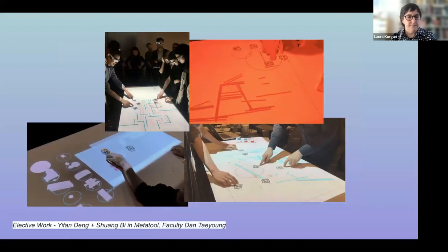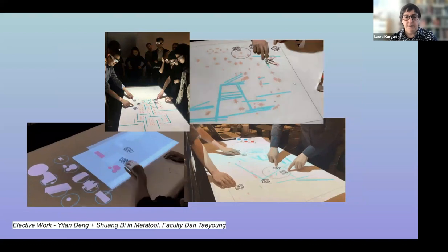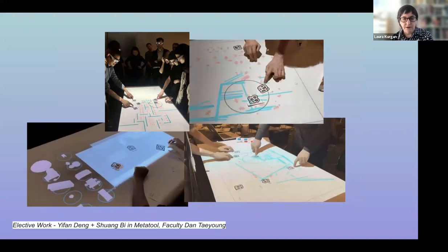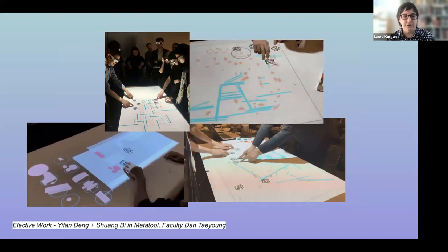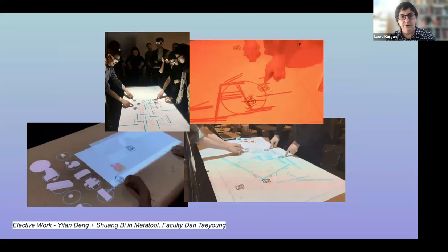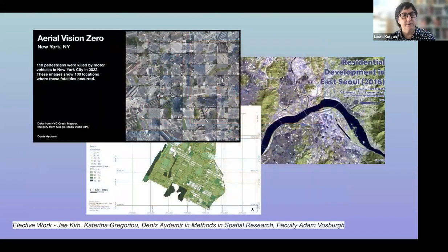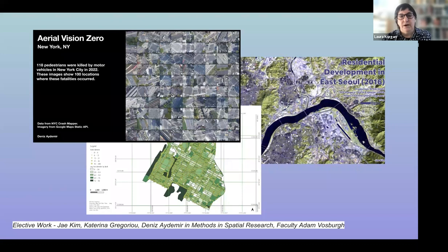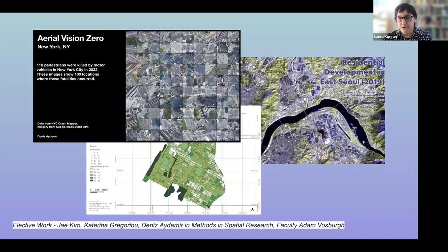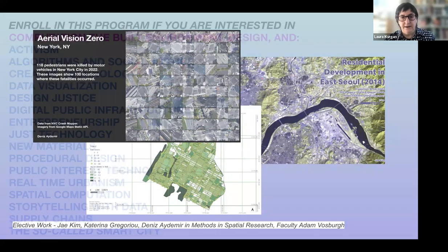This is the work of Zoe Lin, whose project on food networks in Chinatown uses Google Street View to look at changes in the neighborhood from 2005 until now. This is Dante Young's meta tool class, where he rethinks human computer interaction in a much more collaborative way rather than just one-to-one. And here is Adam Vosburgh's seminar, Methods in Spatial Research, which many students took in relation to other seminars at GSAP to produce maps related to specific subject matter.